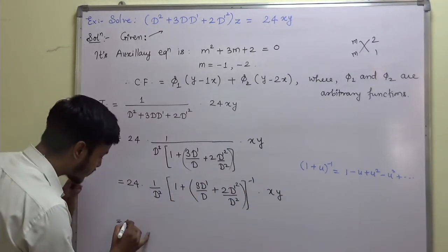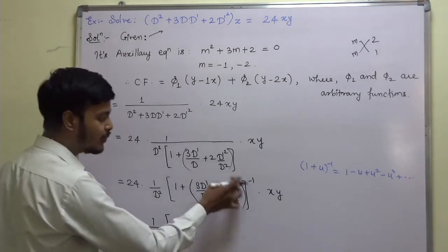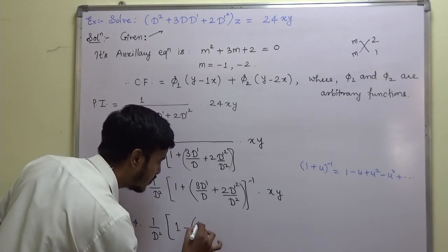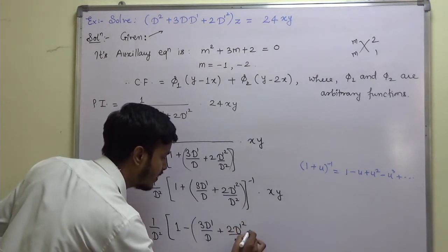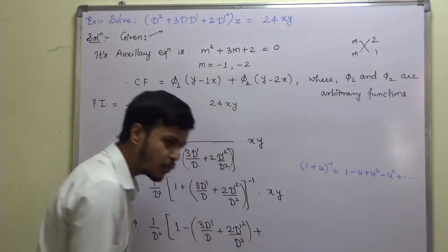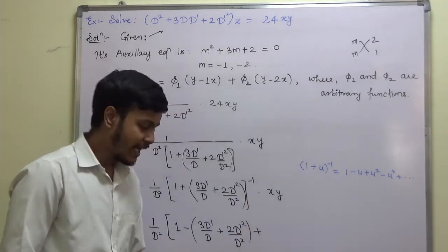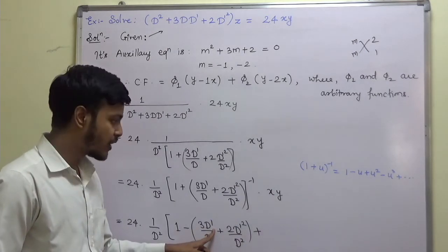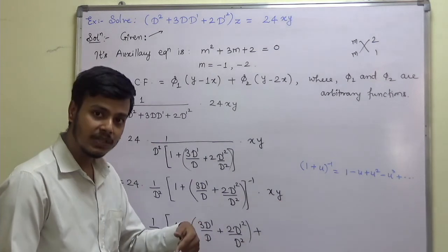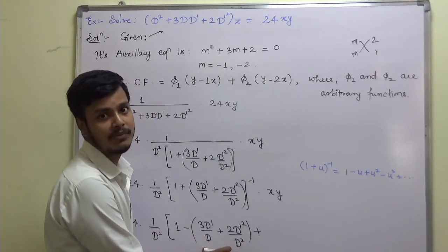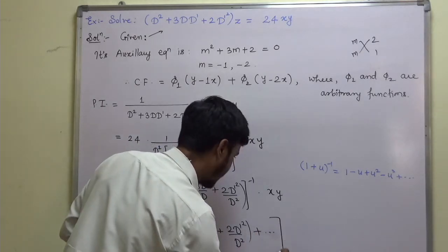So it becomes (1/D-squared) times [1 minus (3 D-dash/D + 2 D-dash-squared/D-squared) plus higher terms] acting on xy. Now, D-dash stands for derivative with respect to y, so one derivative of xy with respect to y gives x, and the second derivative gives derivative of x with respect to y which is 0. So only the first correction term contributes; the rest give 0.